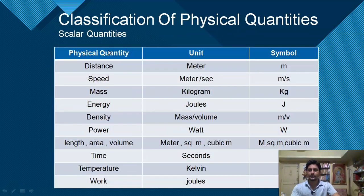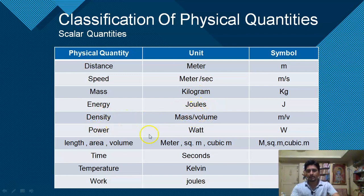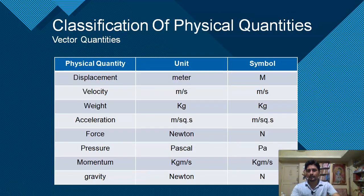Scalar quantities include: distance (meter), speed (m/s), mass (kilograms), energy (joules), density (mass per volume), power (watt), length, area, volume (m, m², m³), time (seconds), temperature (Kelvin), and work (joules). All scalar quantities require only magnitude for their complete expression.